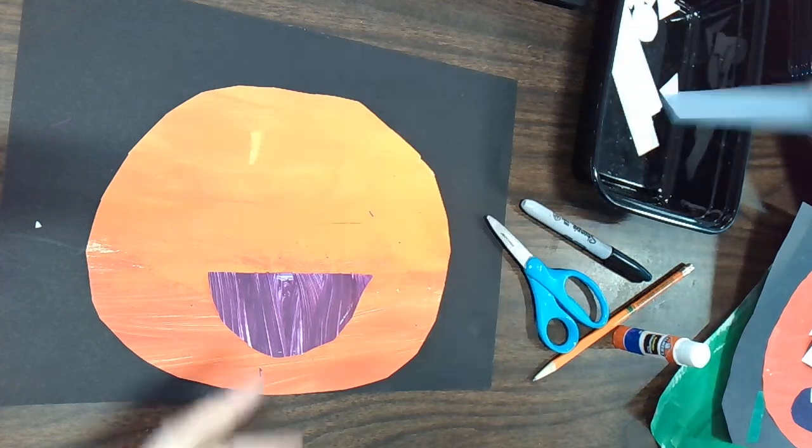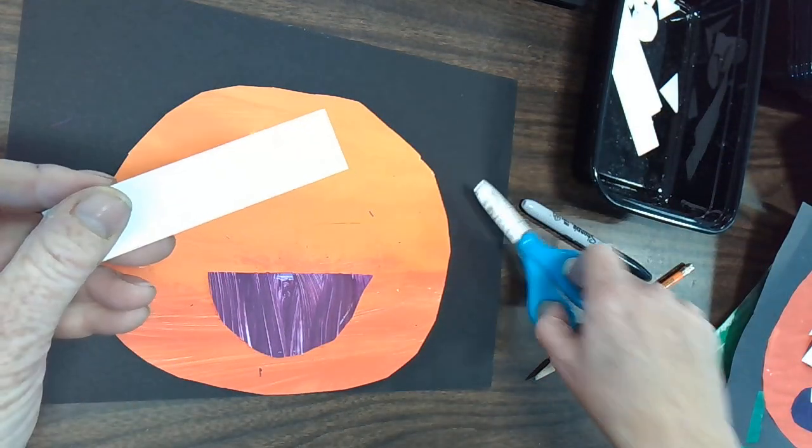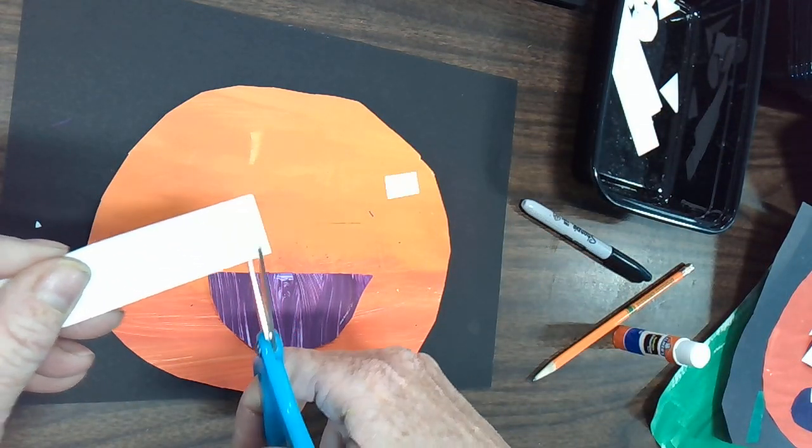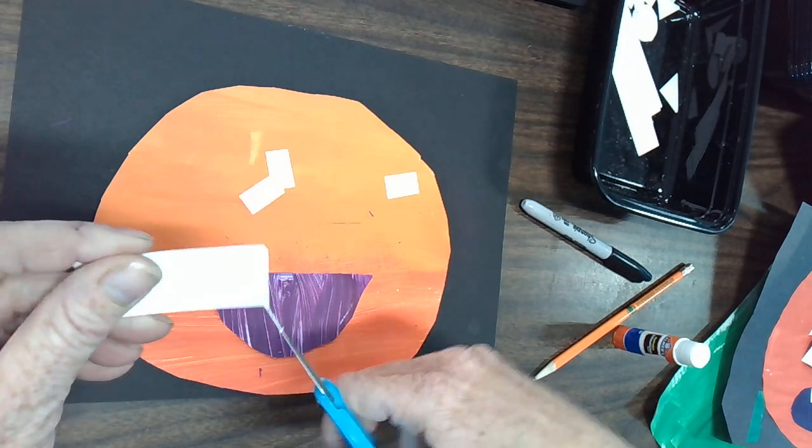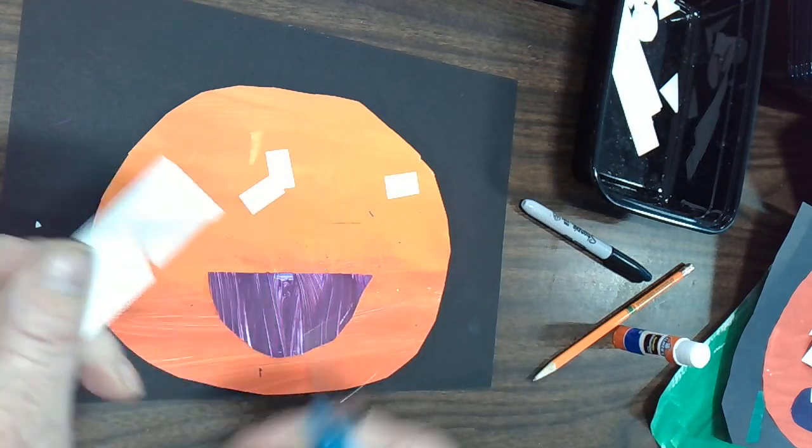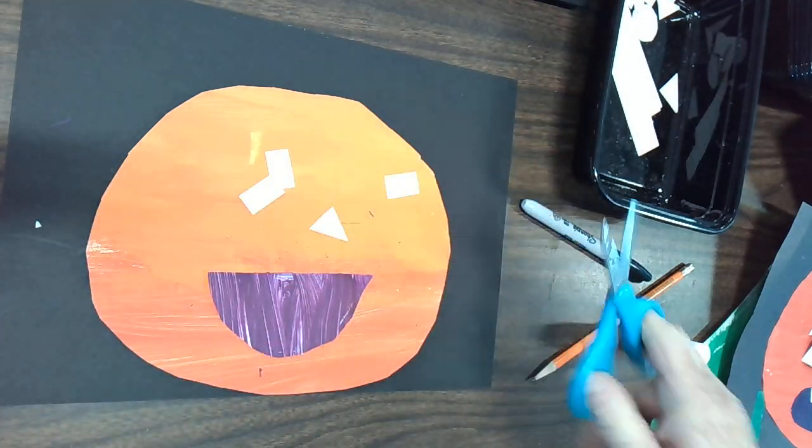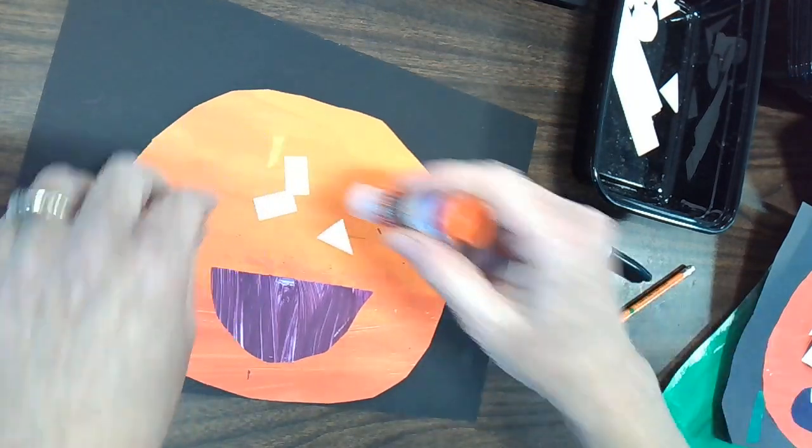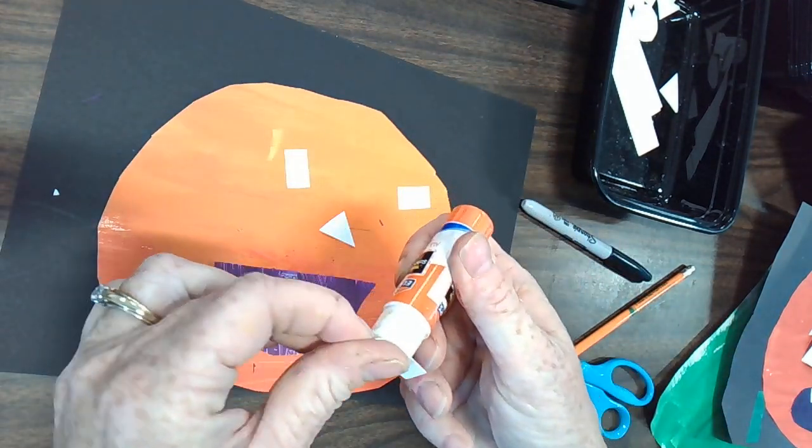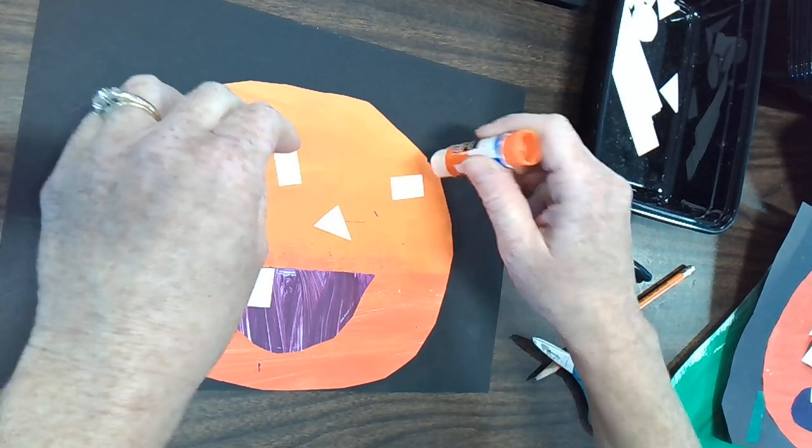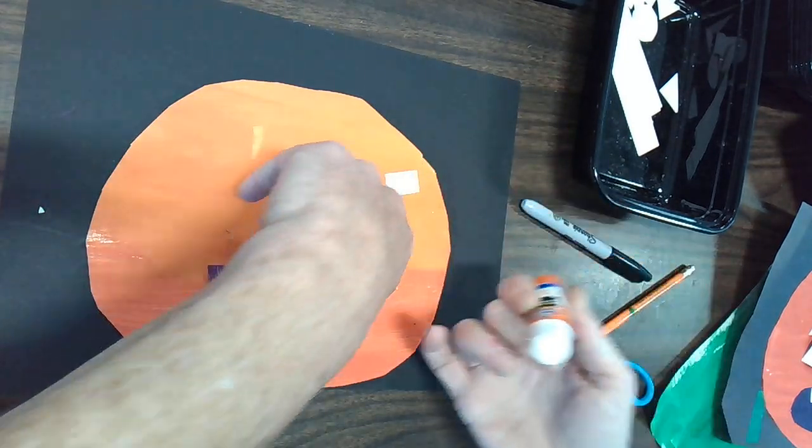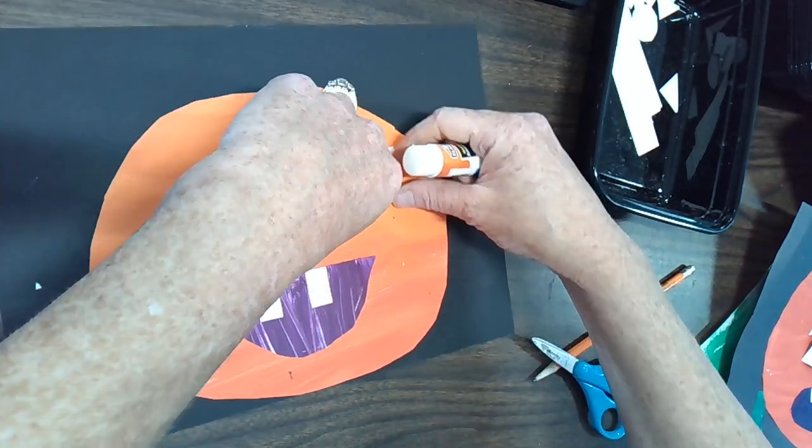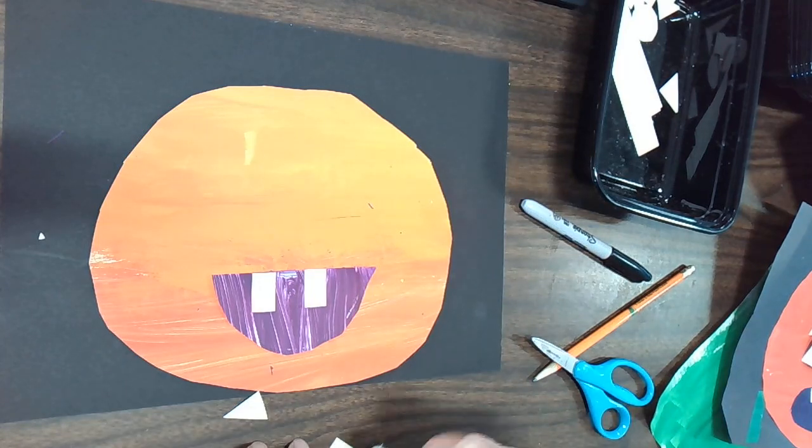To make some teeth for my mouth, I have these long strips of white paper. You can cut some little pieces like this or you could cut some triangles if you'd like sharp pointy teeth. Whatever kinds of shapes you would like. And again, you're going to put a little bit of glue on the back and you can stick them right on to make your pumpkin's teeth. You can put some at the top, maybe I'll put one at the bottom as well.